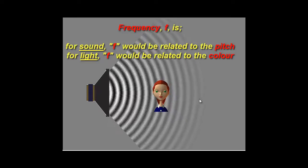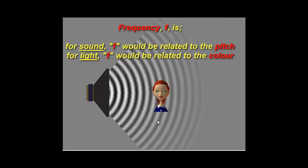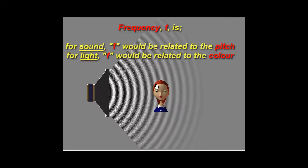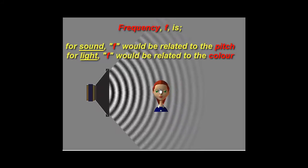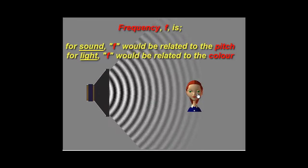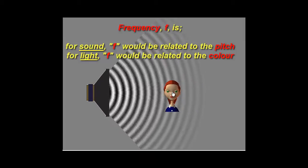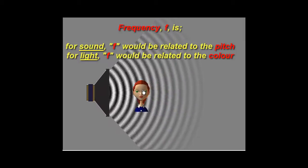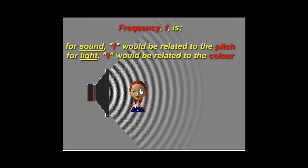Notice that the waves also get dimmer as they get further away because they make bigger and bigger circles. The energy of the wave has to dissipate. If I move myself further away, as expected, the sound will be diminished. If I get closer to the speaker, the amplitude is bigger because I'm nearer to the actual source and the energy hasn't dissipated as much.